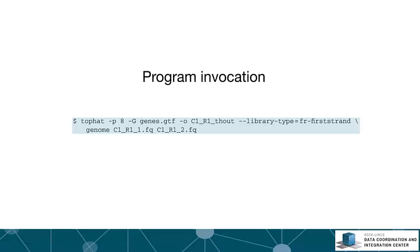The graphical workflows are well and good, but it's important to realize that they don't actually do anything that you couldn't do on a command line basis with the programs themselves, either in an environment like R or directly on a Unix command line. Here I'm showing an example of a program invocation where we're calling the program TopHat from the Tuxedo pipeline and passing it some arguments.